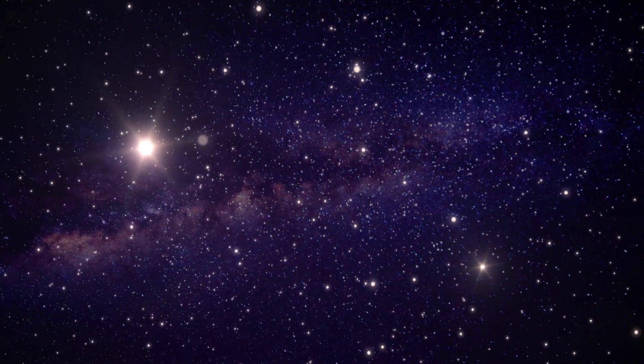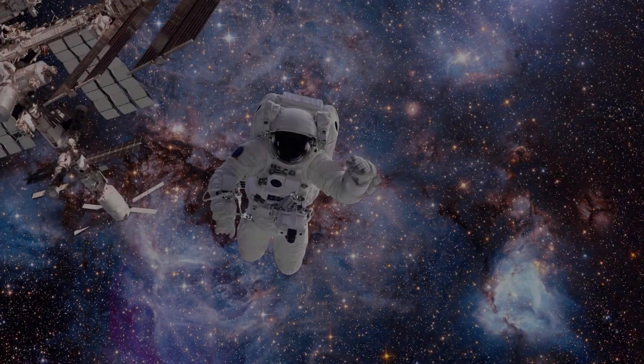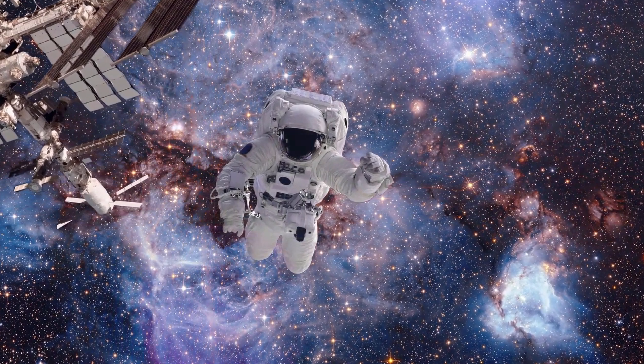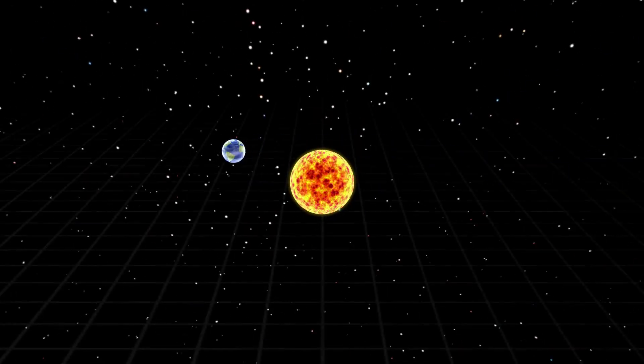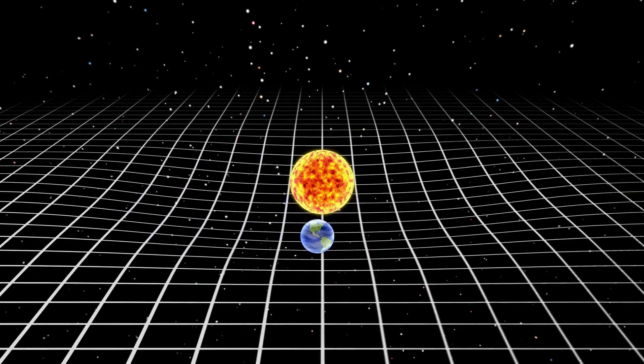They leave behind the mass of at least several Suns, tightly packed into a relatively small space—the black hole. These dense objects have incredibly strong gravitational pulls from which nothing, including light itself, can escape.